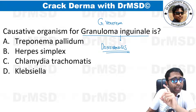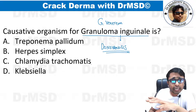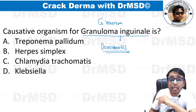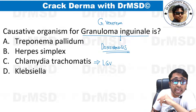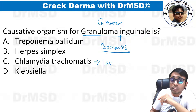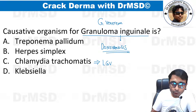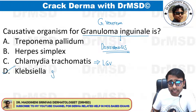Be careful not to confuse this condition with lymphogranuloma venereum, which is a different genital ulcer disease. The causative organism for lymphogranuloma venereum is Chlamydia trachomatis. For granuloma inguinale, the answer is option D: Klebsiella granulomatis.